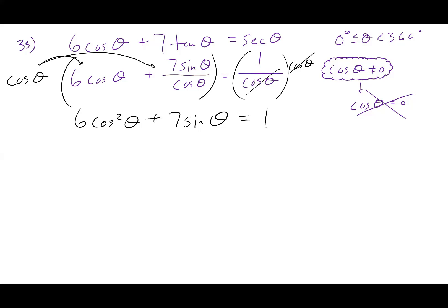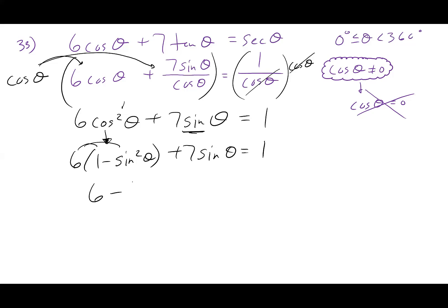Now I've got two trig functions, but I got a little trick I can use. Since one of them is a squared function — I have a linear sine function and a squared cosine function — I'm going to change cosine squared into one minus sine squared theta. That way it will allow me to have everything in terms of sine functions. Distribute that through.